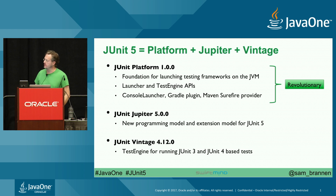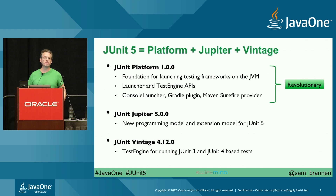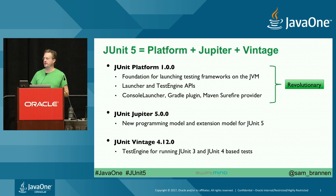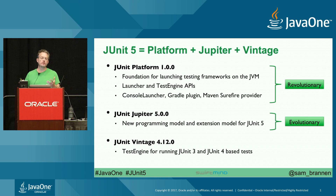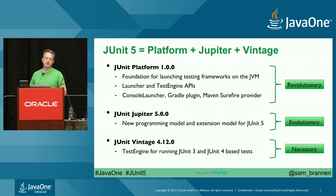The platform is revolutionary — it's a new platform to write any kind of testing framework that runs on the JVM, and everyone can benefit from that. JUnit Jupiter is evolutionary — there was JUnit 4, and now there's this JUnit Jupiter with similar but improved programming models. And JUnit Vintage is necessary just to support existing testing code bases.